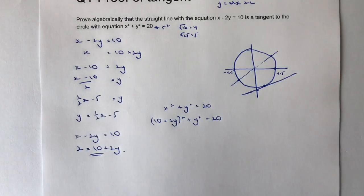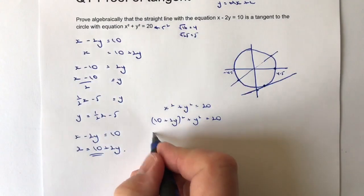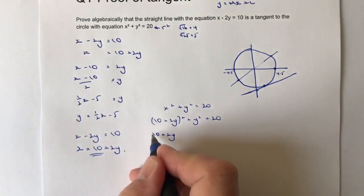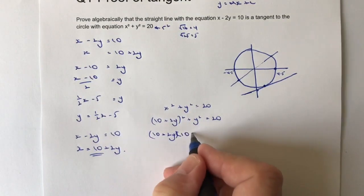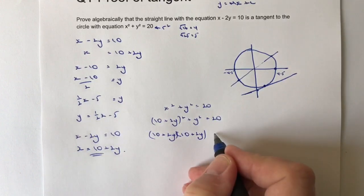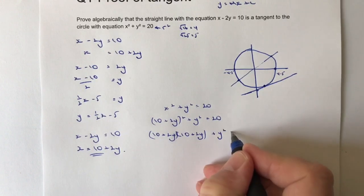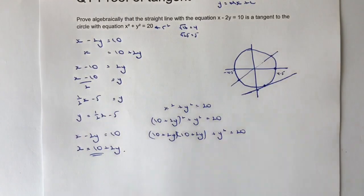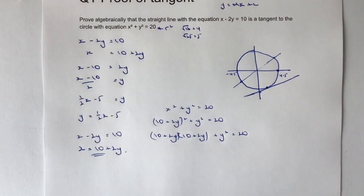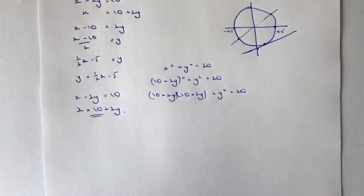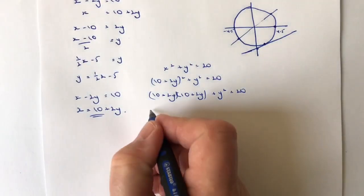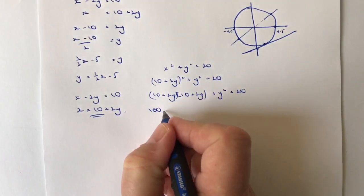So if I expand that, I've got 10 plus 2y times 10 plus 2y. I suspect the numbers are going to be quite large here, but I think they'll all work out for us without too much of a problem. So I'm just going to work down the page here. 10 times 10 is 100.